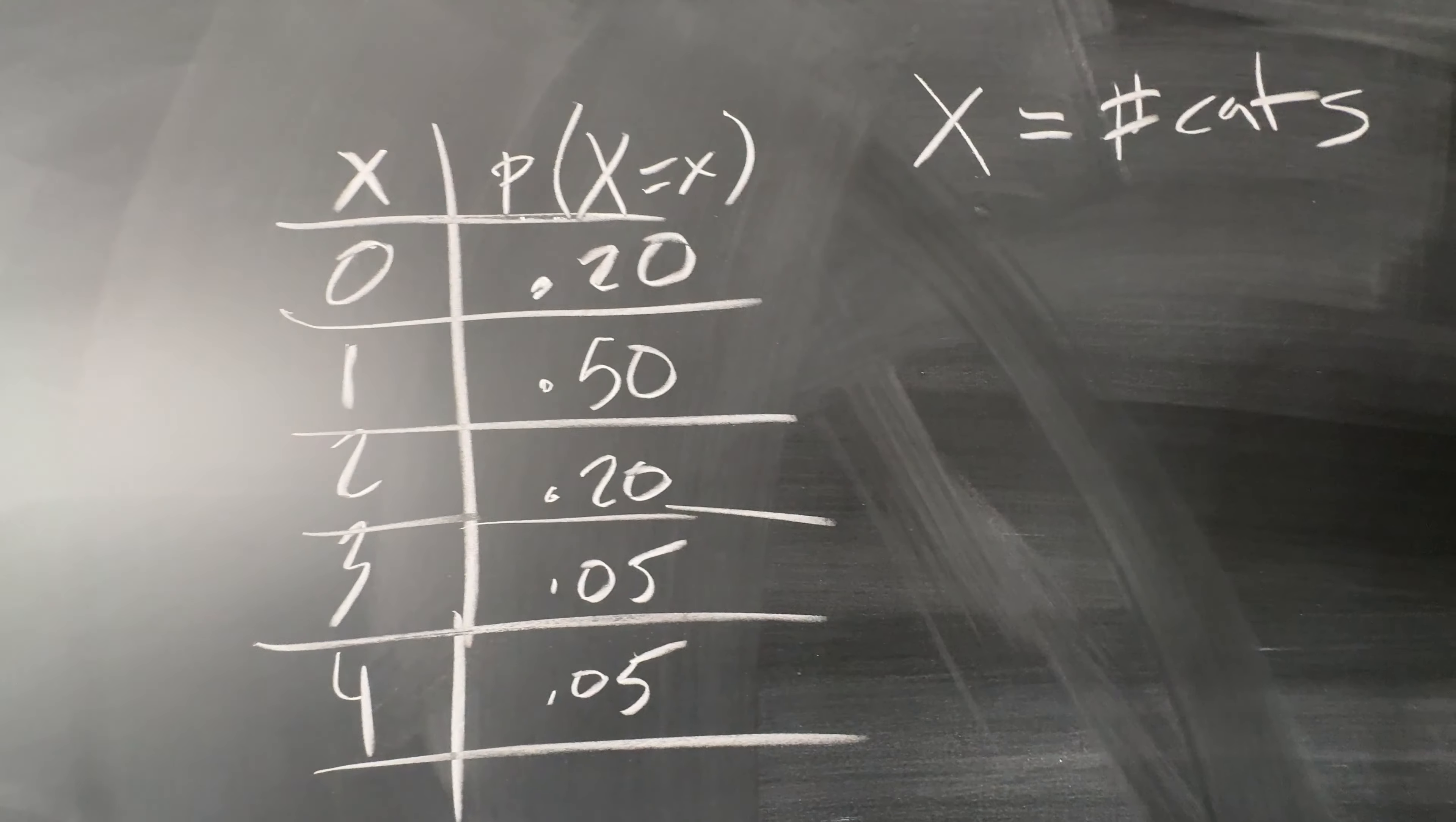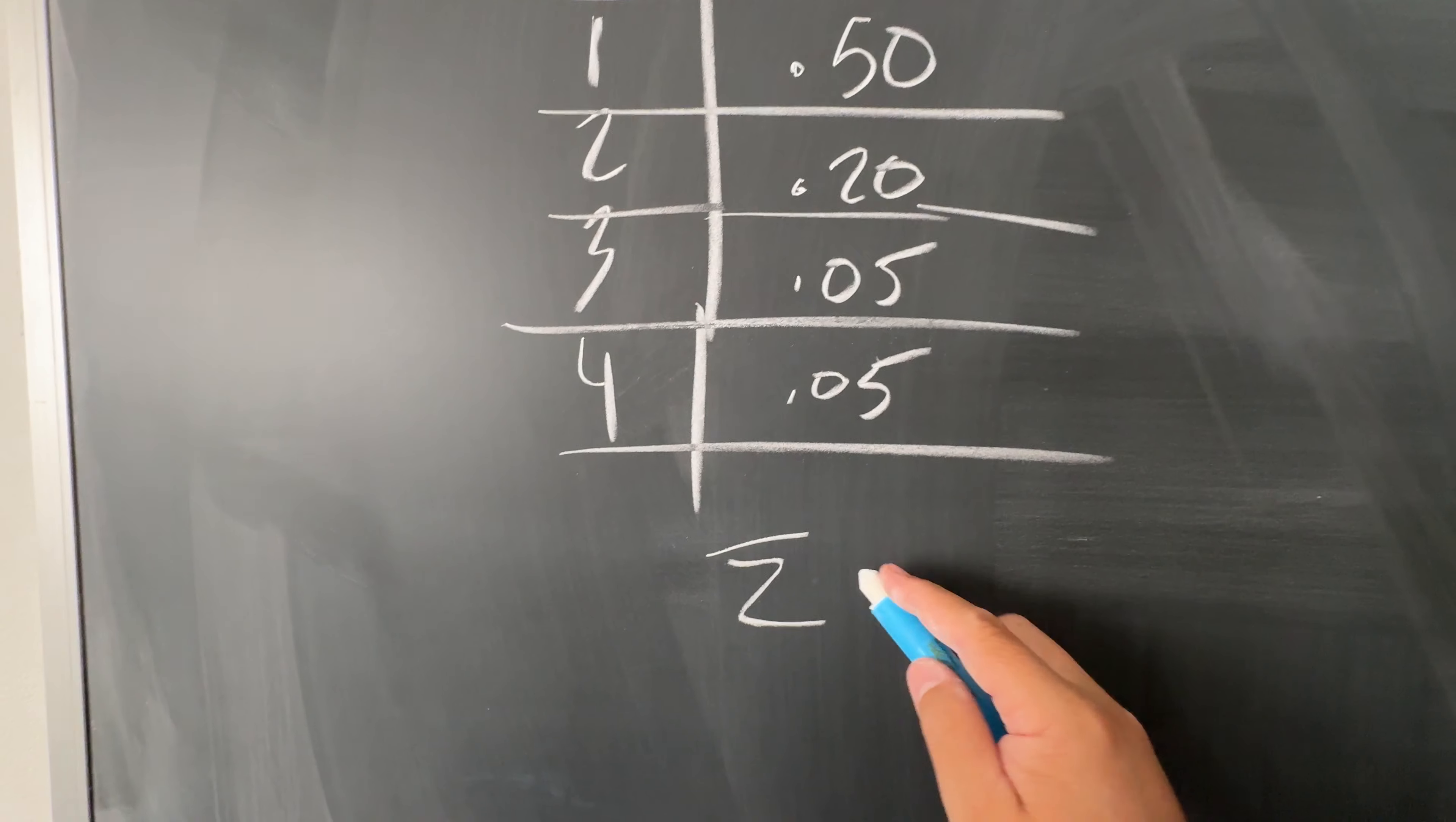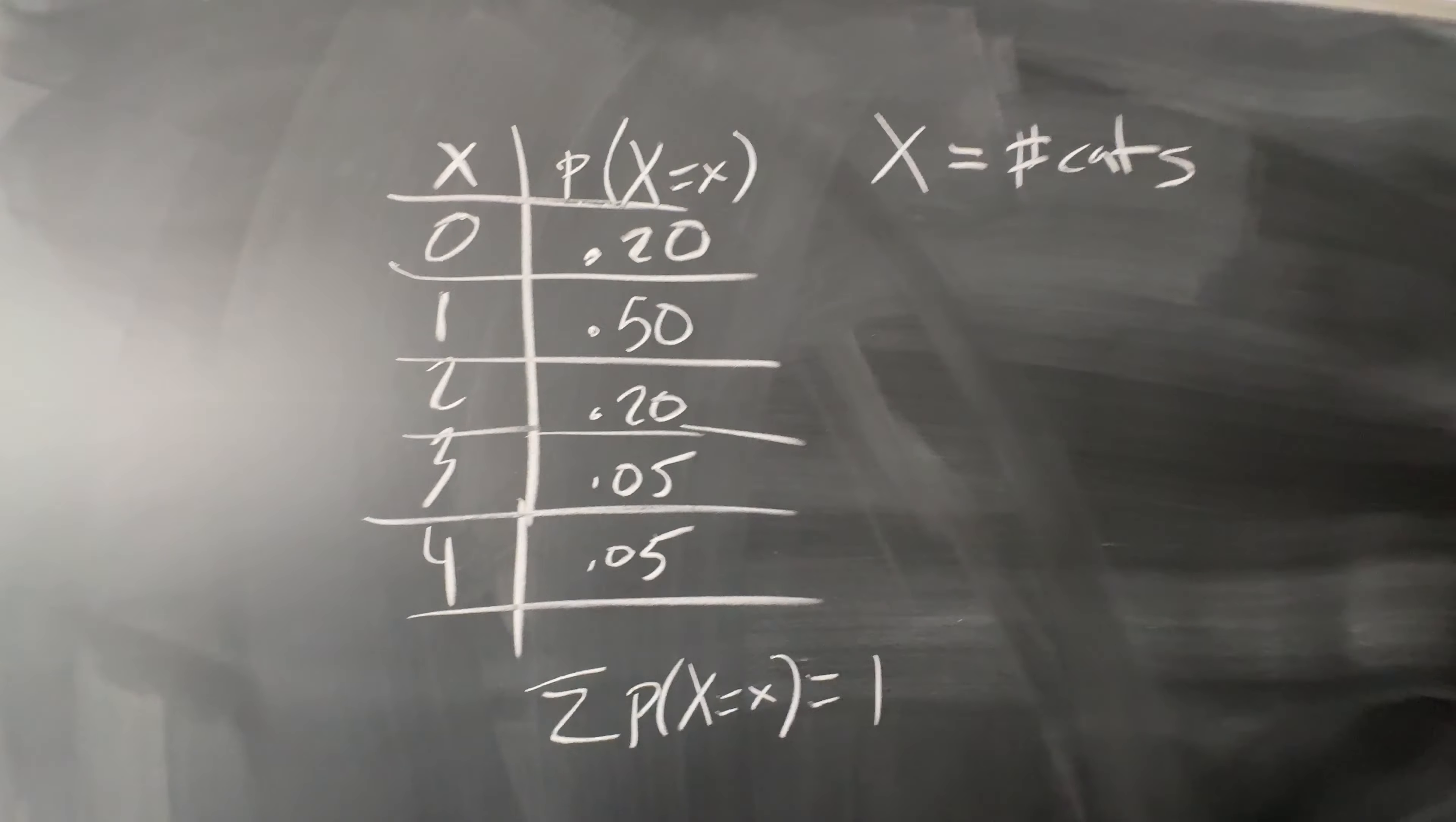So, you got 5, 6, 7, 8, 9, and 10. So, this should sum to 1, right? Because this whole thing is equal to 1.